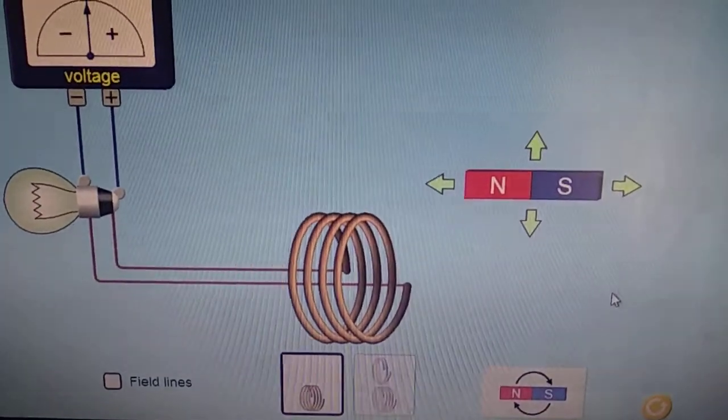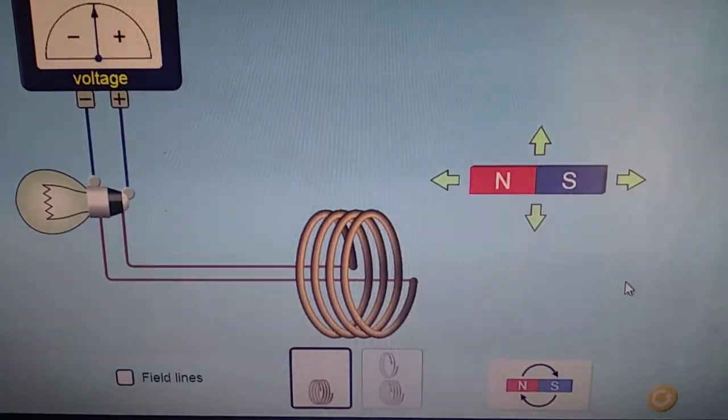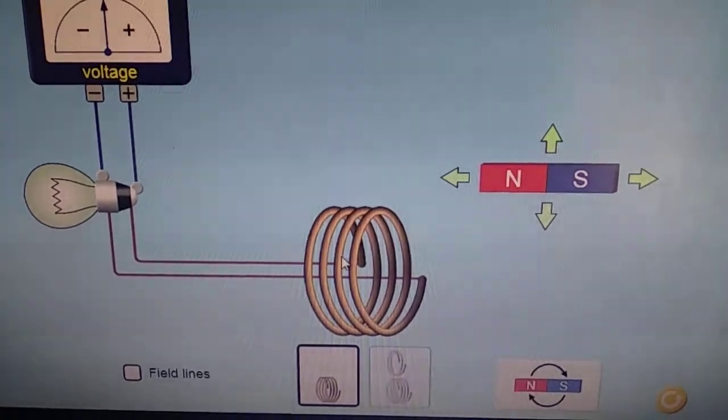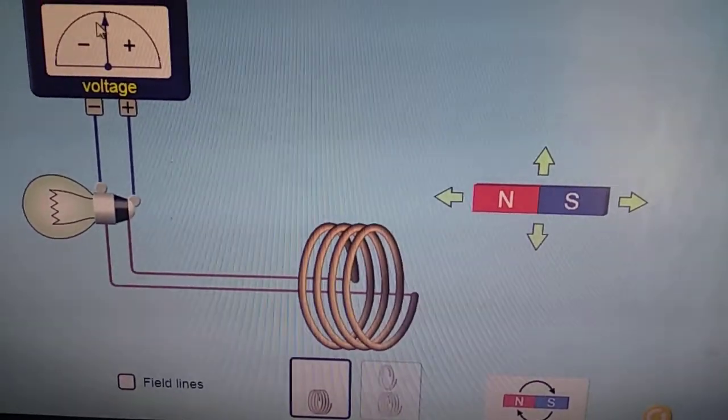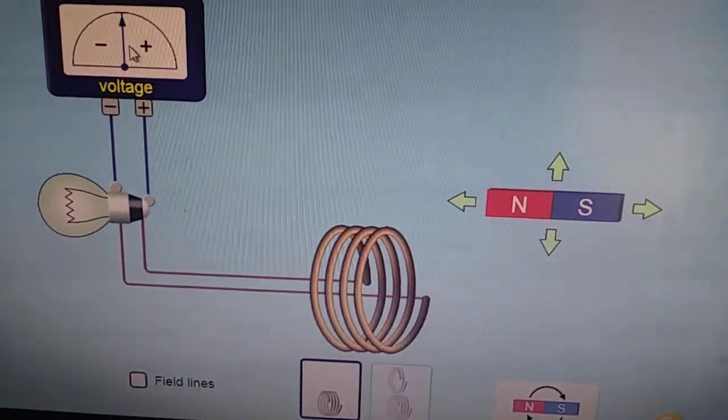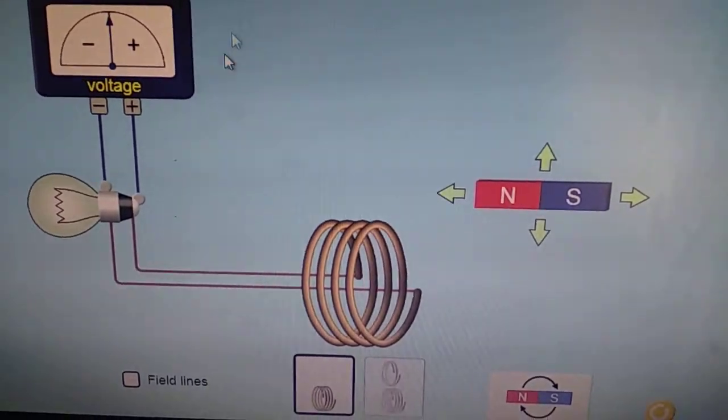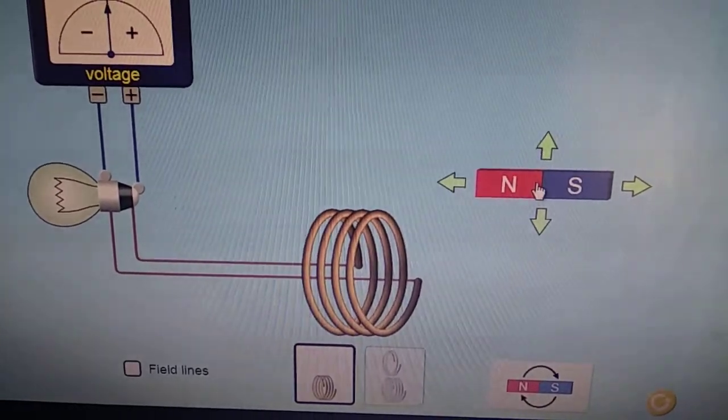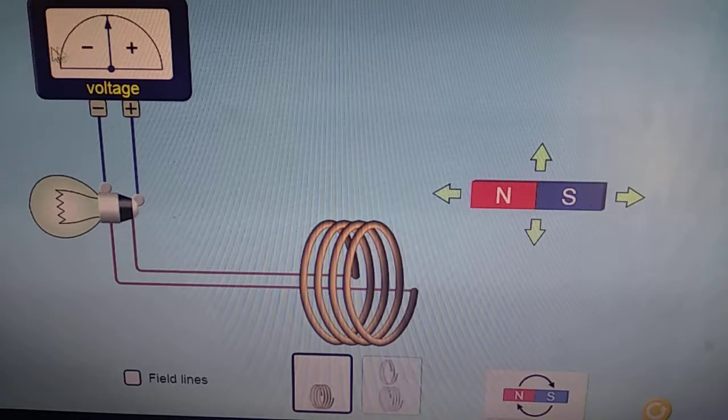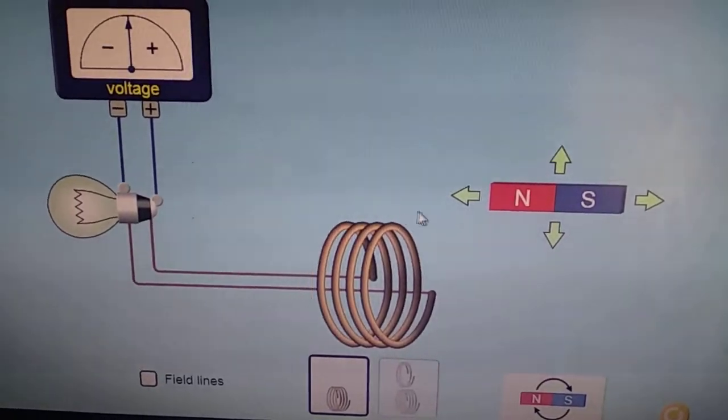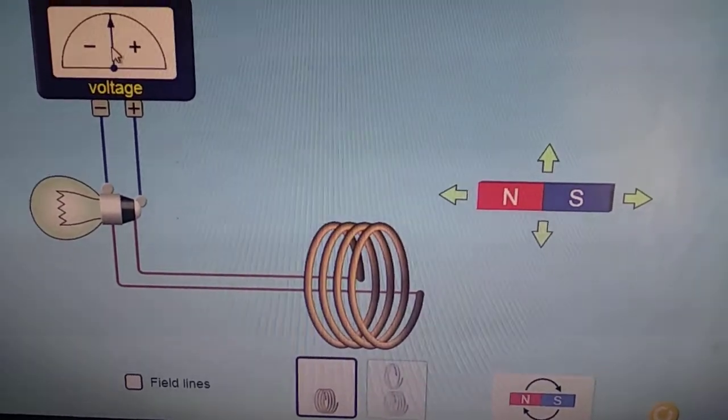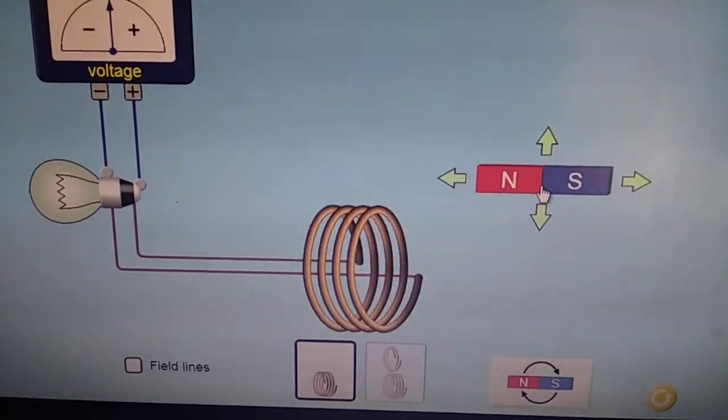Here you can see there is a bar magnet, a coil, a bulb and a voltmeter is attached to show the induced EMF. Now, when the magnet is stationary and all these things are stationary, there is no voltage in the circuit. EMF is 0.